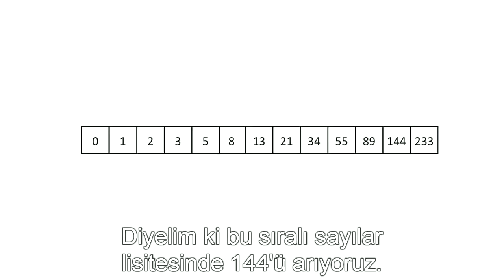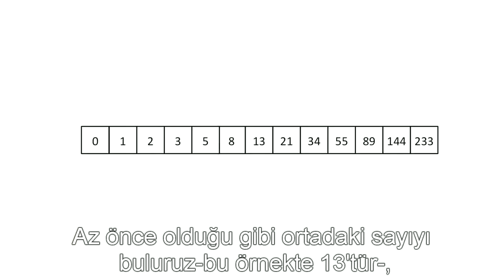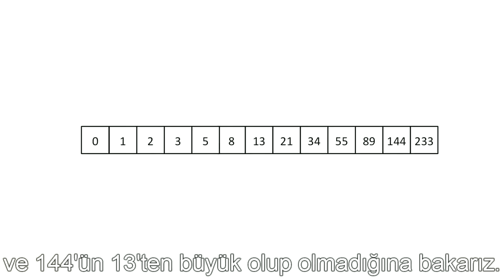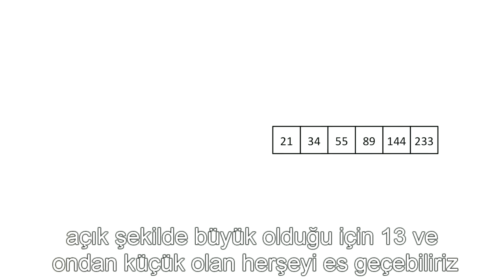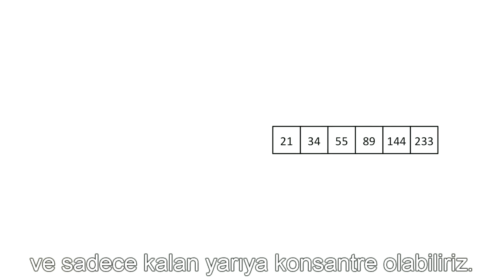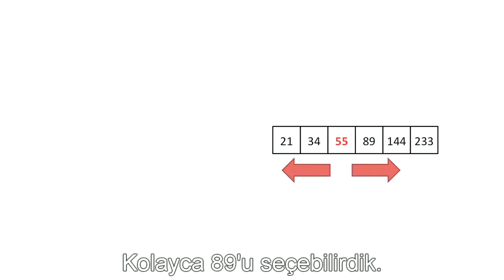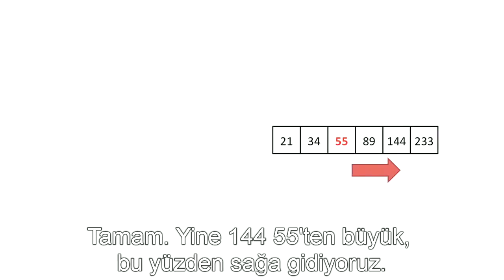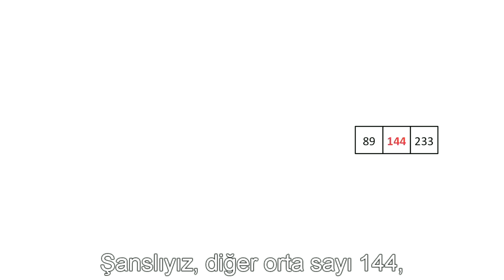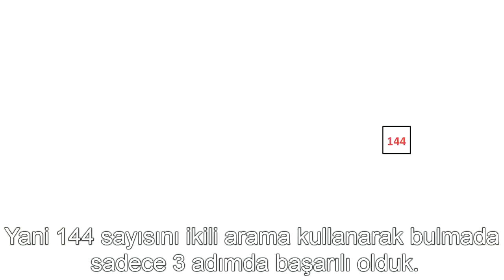Say we are looking for the number 144 in this list of sorted numbers. Just like before, we find the number that's in the middle, which in this case is 13, and see if 144 is greater than or less than 13. Since it's clearly greater than 13, we can ignore everything that is 13 or less and just concentrate on the remaining half. We choose 55 as the next midpoint — 144 is greater than 55, so we go to the right. The next middle number is 144, the one we're looking for. So in order to find 144 using a binary search, we're able to find it in only three steps. If we would have used linear search here, it would have taken us 12 steps.